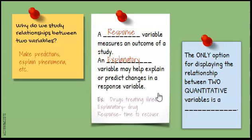Independent variable is your explanatory and your dependent variable is your response. For example, if I'm looking at how a drug treats an illness, the explanatory variable is the drug. The response variable is the time it takes to recover from the illness. The only option for displaying a relationship between two quantitative variables is the scatterplot, and they're fairly easy to construct.